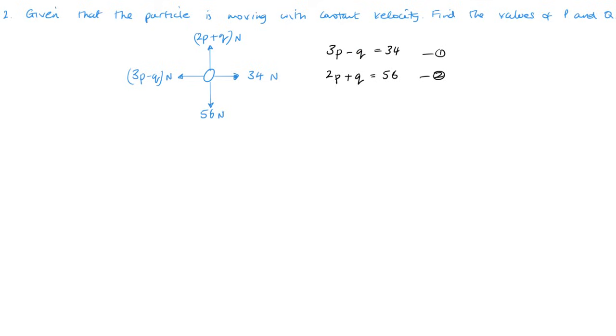Looking at these two, one negative q one positive q, so if I add them they will cancel. So 3p plus 2p is 5p, the q's will cancel, and then 56 plus 34 is 90. 90 divided by 5 is 18, so 18 newtons for p. Then from equation two we'll do 2p plus q equals 56, so that is 18 times 2, so 36 plus q equals 56, so q is equal to 20 newtons.